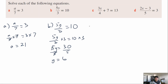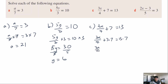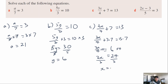Question c: 3x over 4 plus 7 equals 13. The +7 is furthest from x so subtract 7 from both sides first, giving 3x over 4 equals 6. Now multiply both sides by 4 to get rid of the denominator, giving 3x equals 24. Now divide both sides by 3, giving x equals 8.